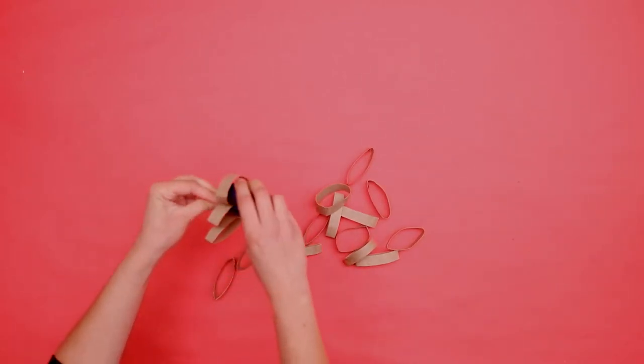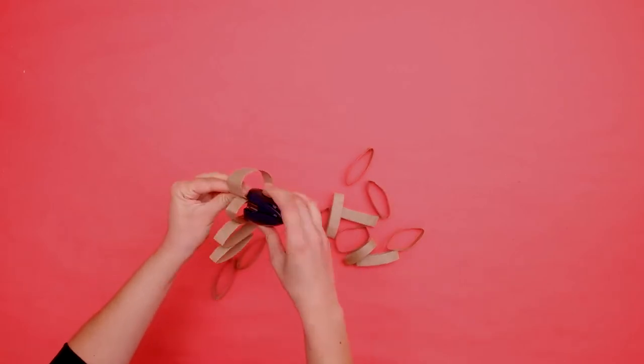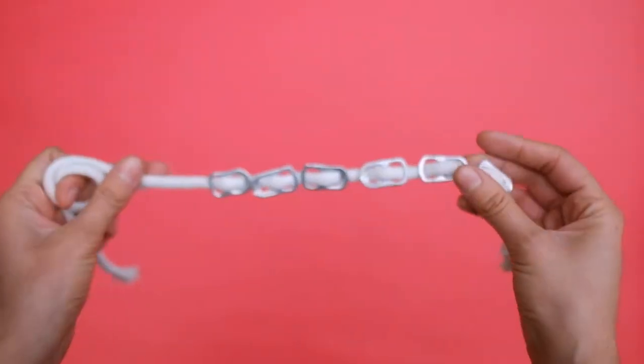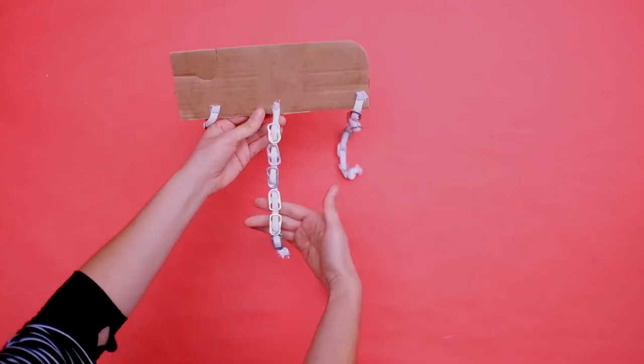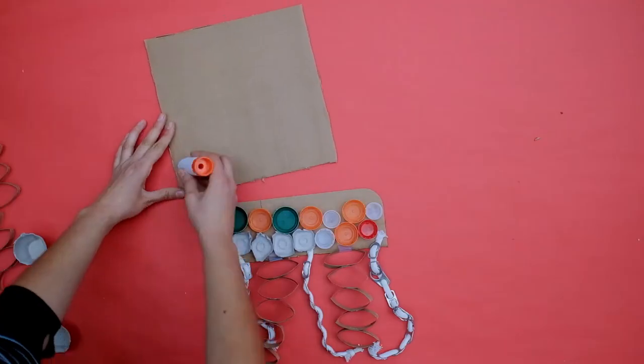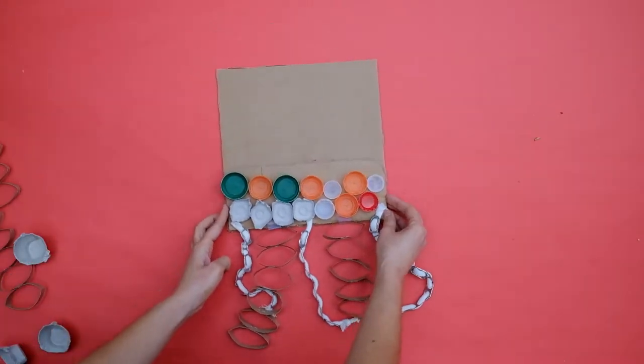For example, you can weave old shoelaces or string through soda can tabs, and then you can staple the shoelaces or string onto a cardboard backing. After you're done attaching your pieces, you're ready for the last step.